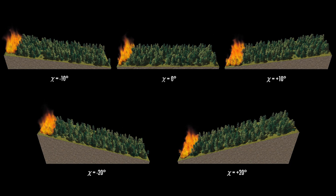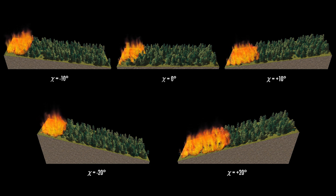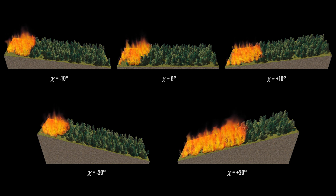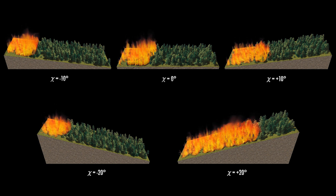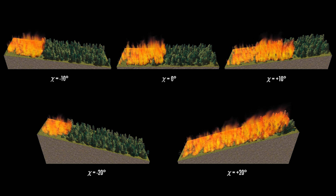We demonstrate the effect of fire spread in a forest using a constant horizontal wind field. We vary the slope of the ground terrain. As expected, for a positive slope the fire spreads faster compared to a flat terrain or a negative slope.